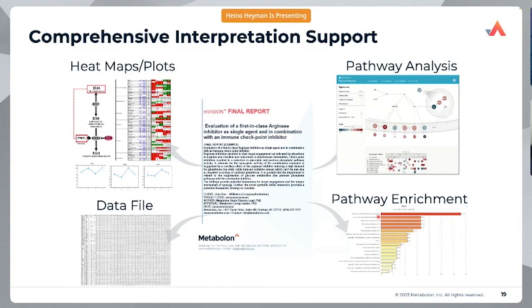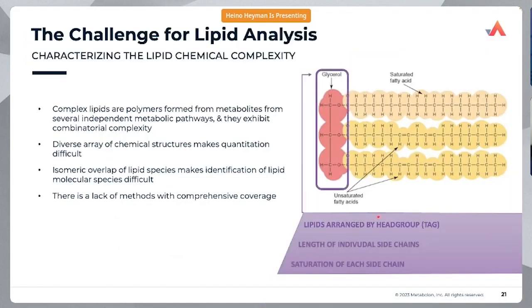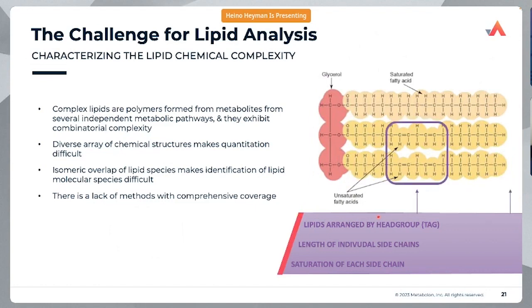Pathway enrichment tools can also be applied. That encompasses our global discovery panel. Moving into the targeted panels: our complex lipid targeted panel looks at 1,100 different lipids and addresses several challenges in lipidomics analyses. Lipids are very complex with high combinatorial complexity due to different chain compositions, different head groups, and different levels of saturation. Because of their similar nature, there is a lot of overlap in lipid analyses, complicating the process and making a comprehensive method for many lipids very difficult.